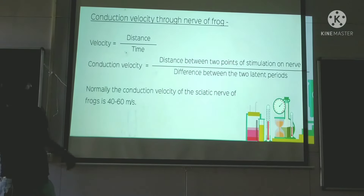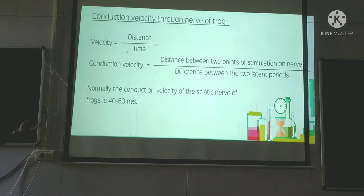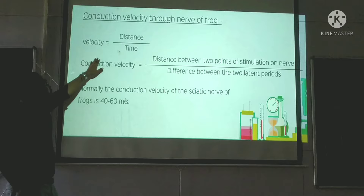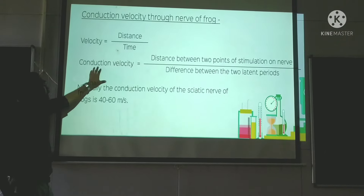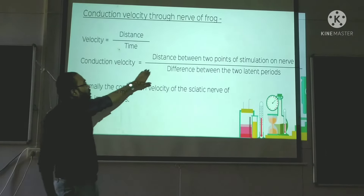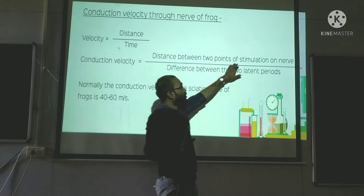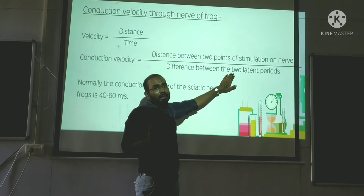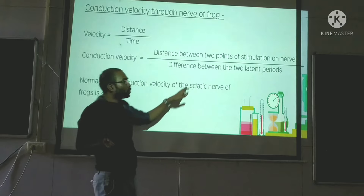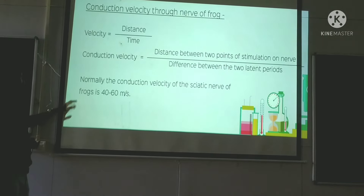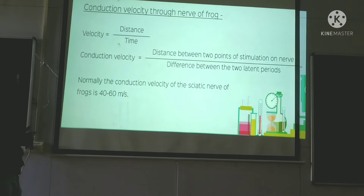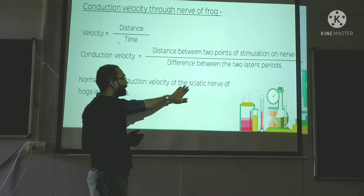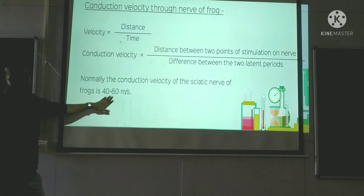Now comes the conduction velocity through the nerve of the frog. The velocity equals distance divided by time. More specifically, the conduction velocity equals the distance between the two points of stimulation of the nerve, divided by the difference between the two latent periods — L1 minus L2. Normally, the conduction velocity of the sciatic nerve is 40 to 60 meters per second.